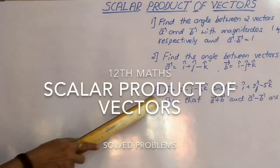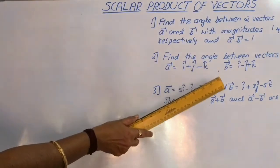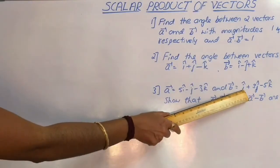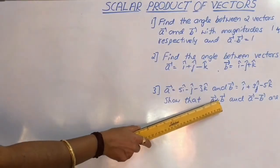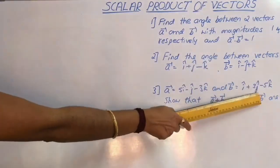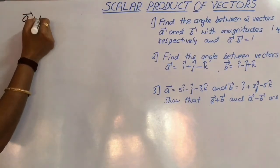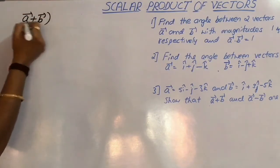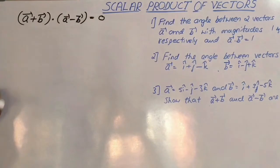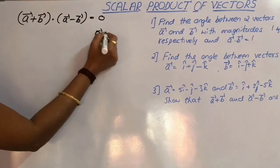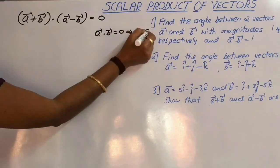Let us consider the third question. Vector A equals 5i cap minus j cap minus 3k cap and vector B equals i cap plus 3j cap minus 5k cap. We have to prove that vector A plus vector B and vector A minus vector B are perpendicular to each other. That means we have to prove that (vector A plus vector B) dot (vector A minus vector B) equals 0, since when the dot product equals 0, theta must equal 90 degrees.